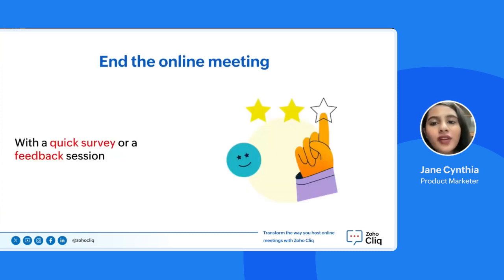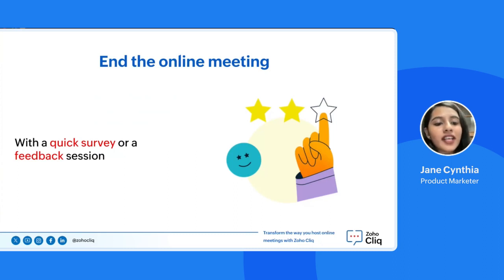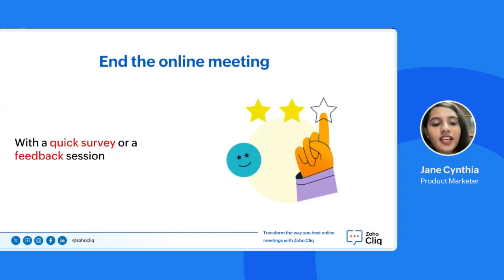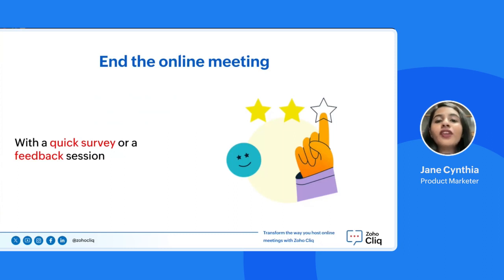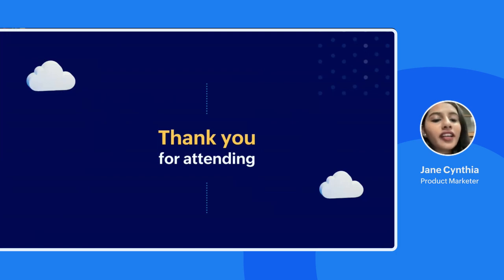So with that, we have arrived at our last part of the agenda — ending your online meeting successfully. Always end your online meeting with a quick survey of how participants felt during the meeting, how the meeting went, and if they would like to change anything for next time. If you continuously feel like you aren't receiving the engagement level you need, ask for feedback — this feedback will help you improve your next meeting. Thank you for attending today's session.